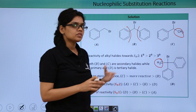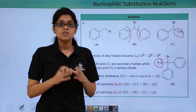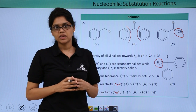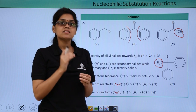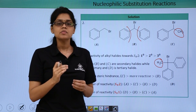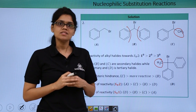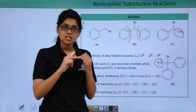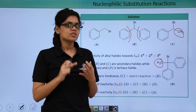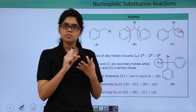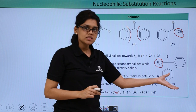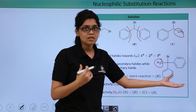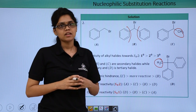Now, what will be the order of reactivity towards SN1 reaction? SN1 reaction is based on the stability of the carbocation being formed. Therefore, the compound that generates the most stable carbocation will be most reactive, and the one that generates the least stable carbocation will be least reactive towards SN1. The order is: tertiary > secondary > primary, because tertiary carbocations are more stable. So D will be most reactive and A will be least reactive towards SN1.